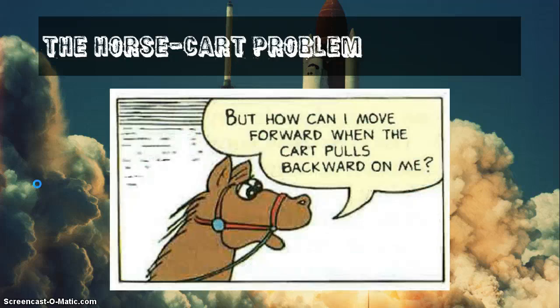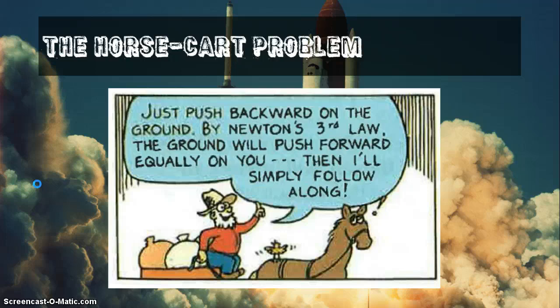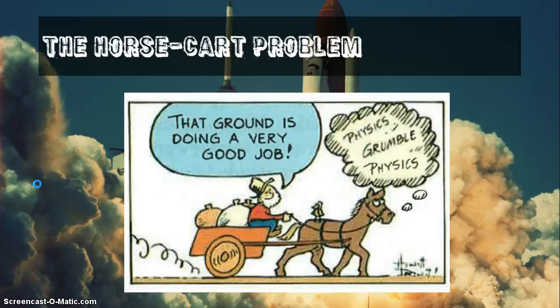Well, the horse says, well, how can I move forward when the cart pulls backward on me? It doesn't make any sense. So he thinks about it a little bit more. The farmer does. And he says, just push backward on the ground. By Newton's third law, the ground will push you forward equally on you. And then I'll simply follow along. So once the horse gets going, the farmer compliments the ground there, saying the ground is doing a very good job.